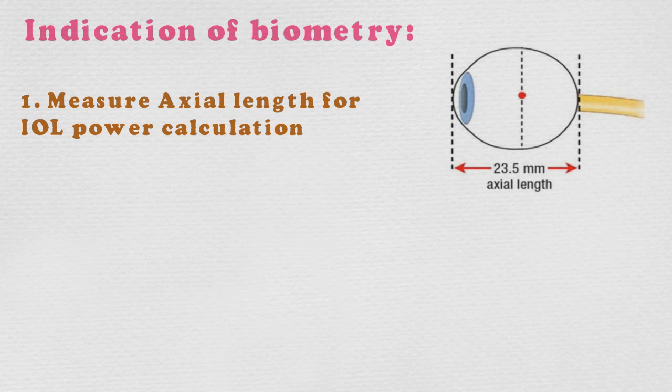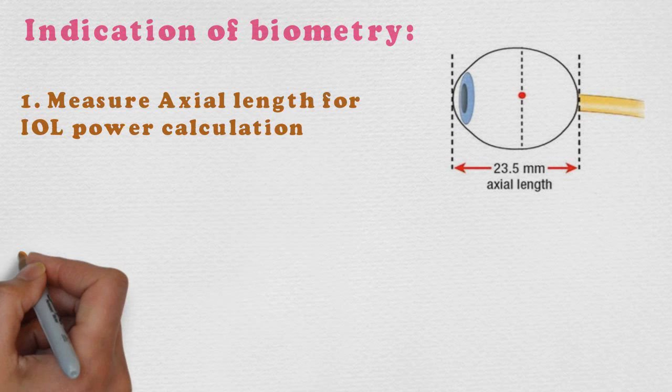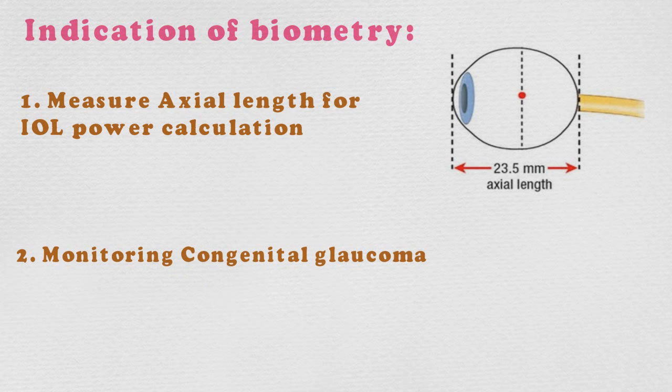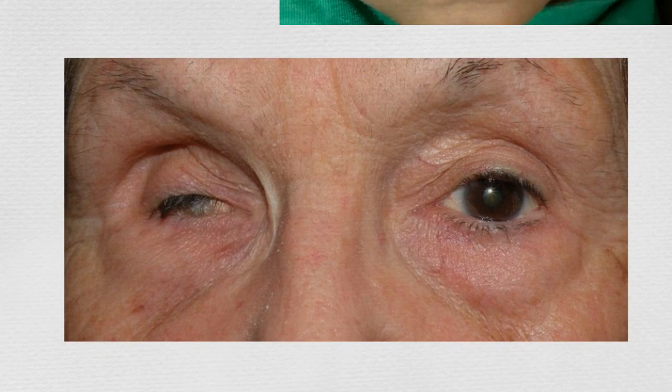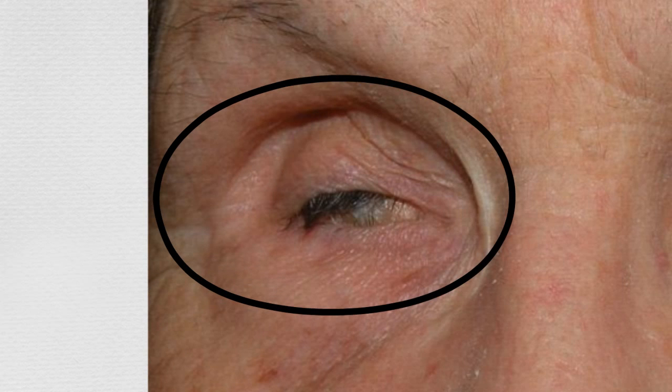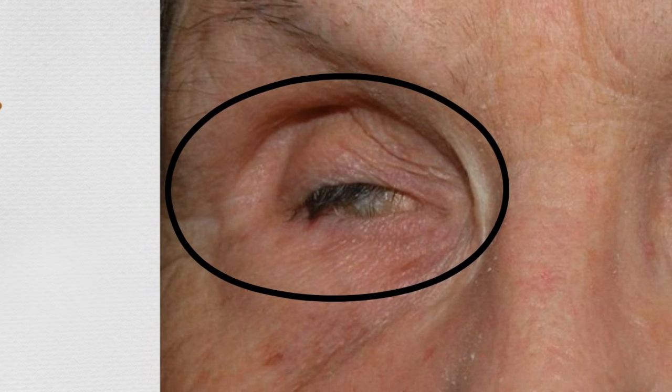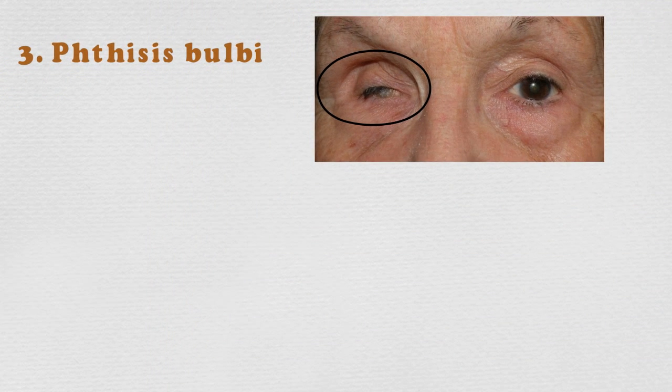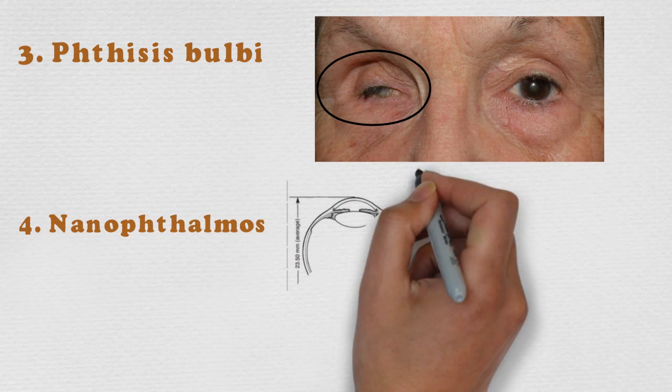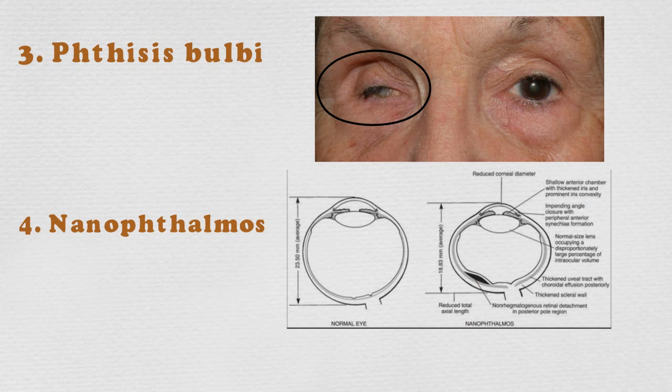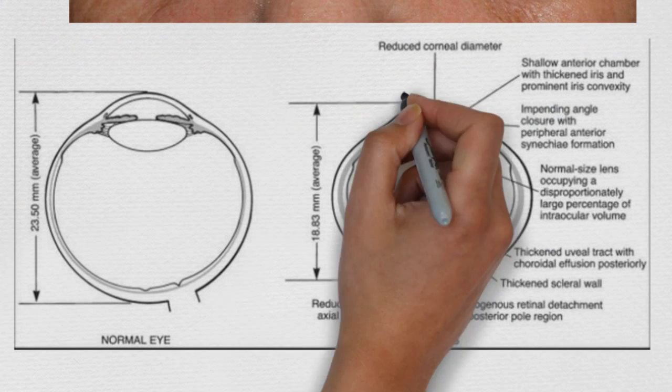The second indication of biometry is monitoring congenital glaucoma. Third indication is phthisis bulbi. Phthisis bulbi is a condition where the eye becomes shrunken due to decreased intraocular pressure. The fourth indication of biometry is nanophthalmos. Nanophthalmos is a condition where the eye is reduced in volume.